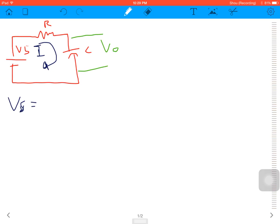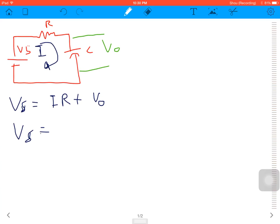equals I multiplied with R plus V out, like this. And next, VS is equal—I is equal dQ by dt. Now we got VS equals dQ by dt multiplied by R plus V out like this.